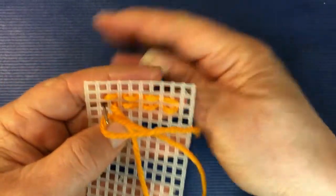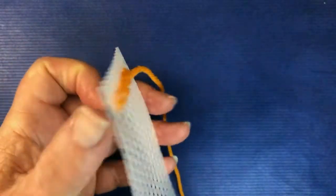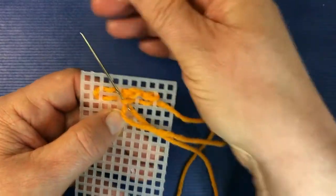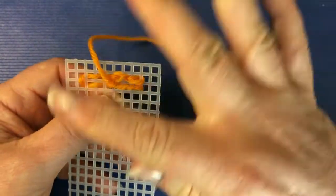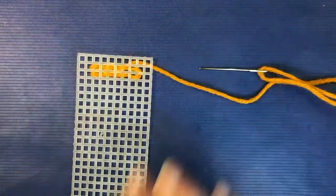And finish. Turn over, thread the needle through, snip off, and you've created running stitch.